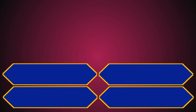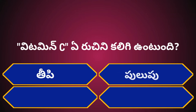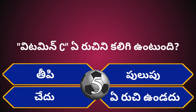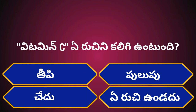Question No. 2. Vitamin C. Ruchini. Options: A. T.P., B. Pulpu, C. Chedu, D. A. Ruchini. Your time starts now. Correct answer is B. Pulpu.